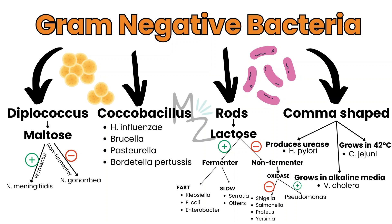Comma-shaped bacteria are further subdivided based on certain criteria. If a bacterium produces urease, it's H. pylori. If it grows in alkaline media, it's Vibrio cholerae. And if it grows at 42 degrees Celsius temperature, it's Campylobacter jejuni.